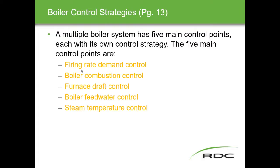The five main control points are: firing rate demand control — as demand increases or decreases we adjust the firing rate; boiler combustion control — using combustion measurements; furnace draft control — measuring draft; boiler feed water control — using temperature and feed water; and steam temperature control. We'll look at each individually.